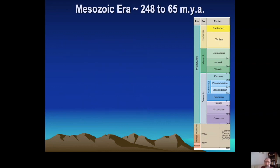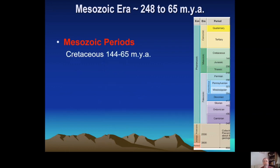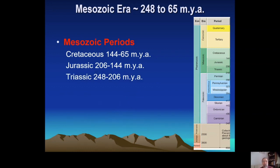The Mesozoic era is a famous era dominated by the dinosaurs. The most recent period of the Mesozoic is the Cretaceous. Prior to that is the Jurassic, made famous by the movie Jurassic Park. And prior to that is the Triassic. This was a period dominated by dinosaurs — almost 200 million years that dinosaurs ruled the planet.